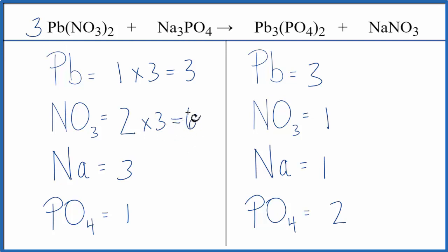Let's balance the nitrates. Now we have six here and one here, so we would put six in front of the sodium nitrate. So one times six, that would give us six sodiums. But one nitrate times six, that would balance the nitrates.